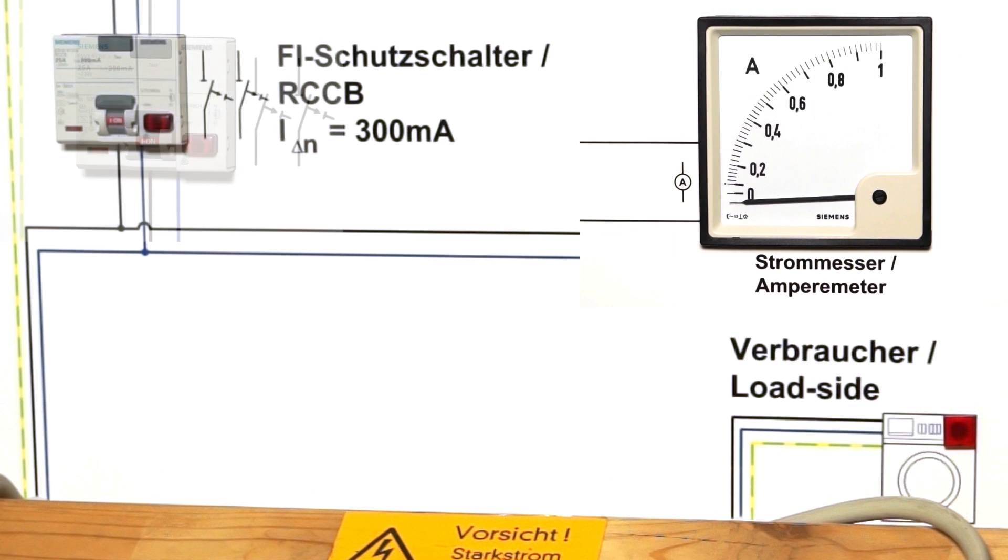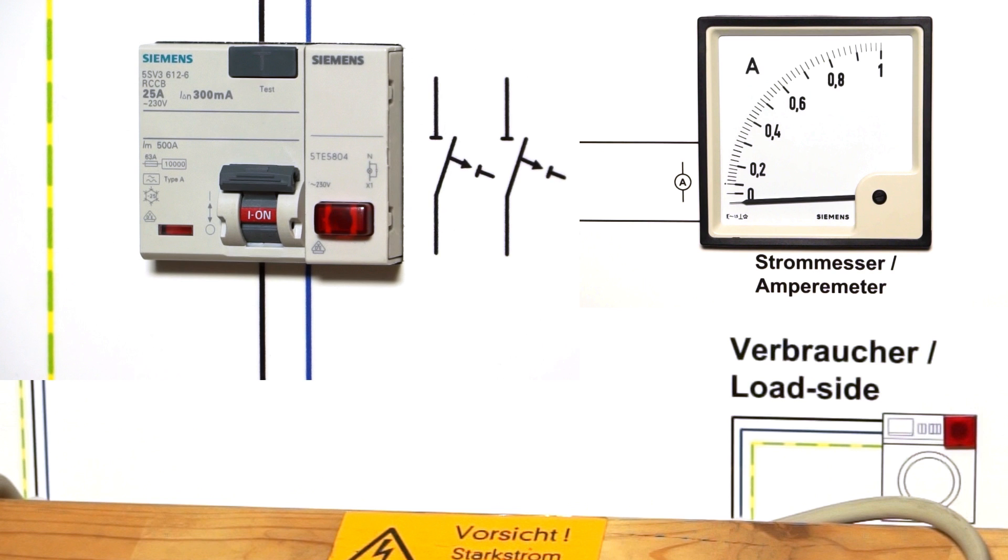The applied voltage causes a current to flow across the fault location. A slight rise in the fault current is sufficient for the RCCBs tripping. This prevents the formation of fire.